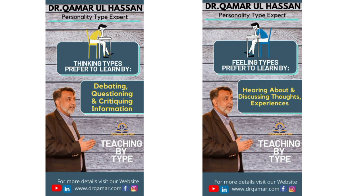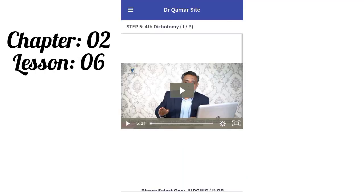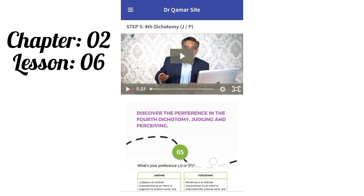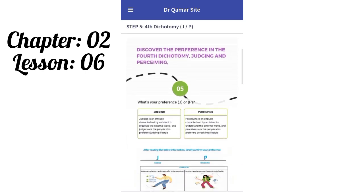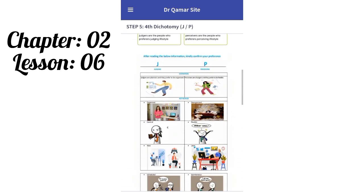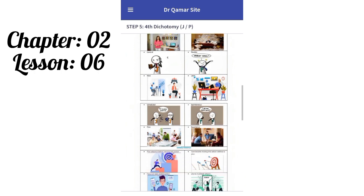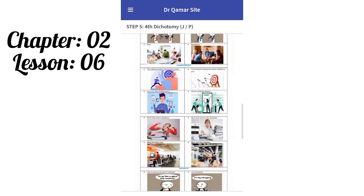Step 5 covers J and P — the fourth dichotomy. J means Judging and P means Perceiving. Dr. Kamarul Hasan provides video, pictorial differentiation, and infographics for learners to help understand the judging and perceiving dichotomy.